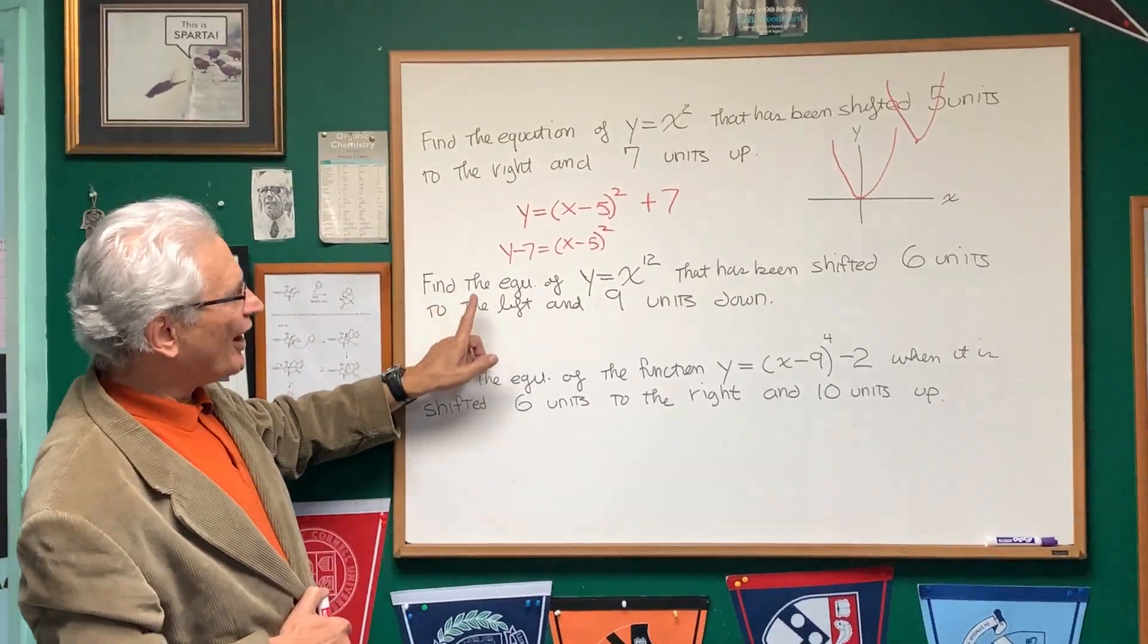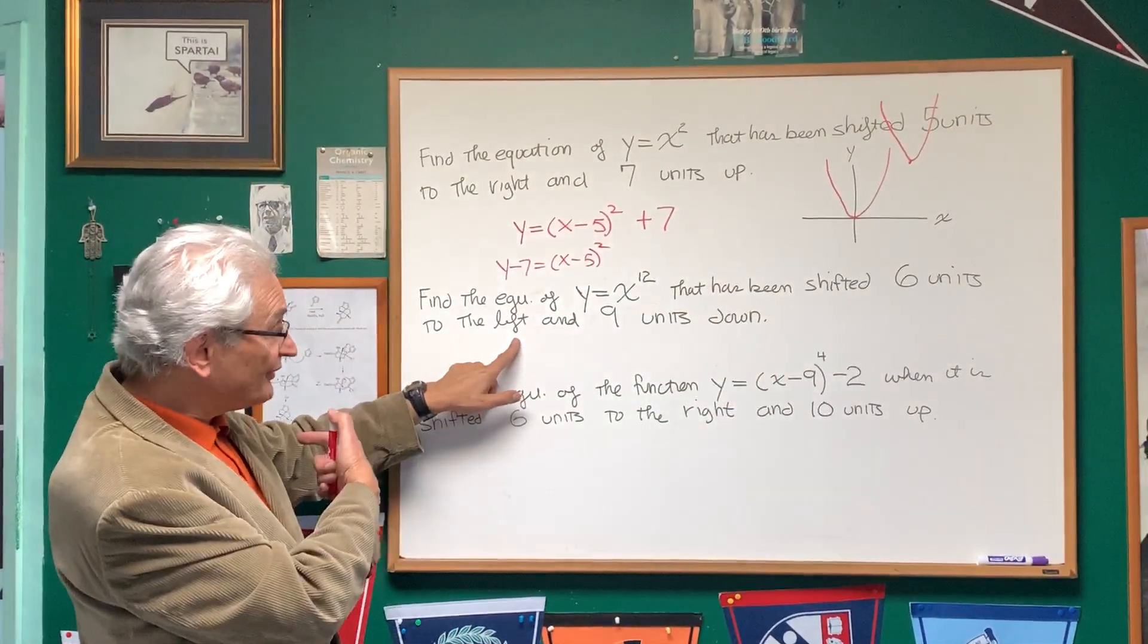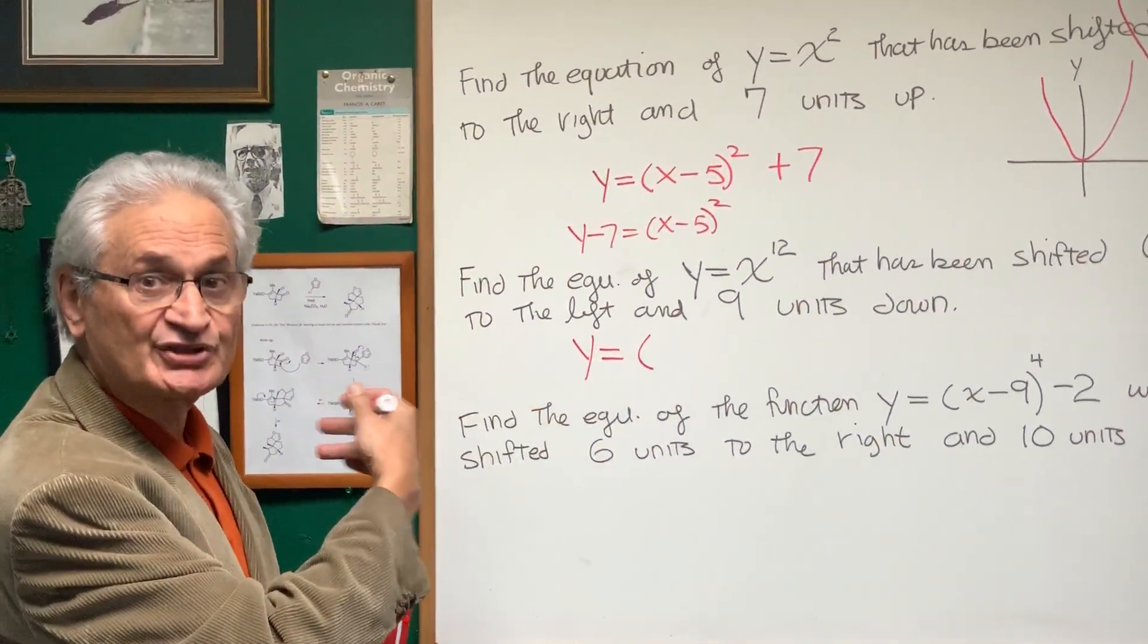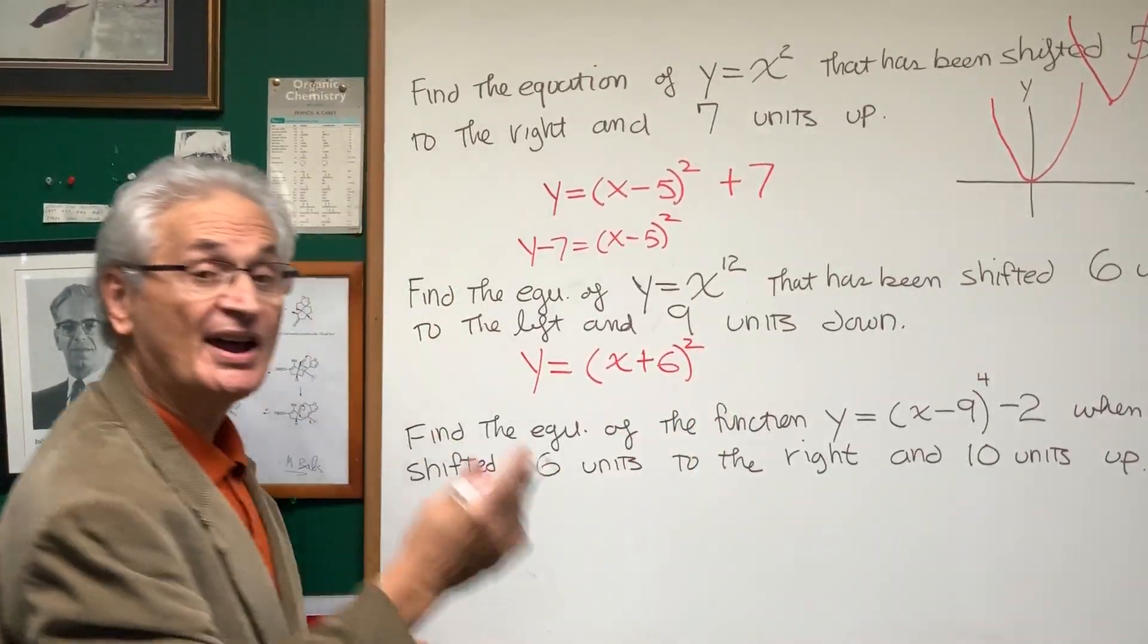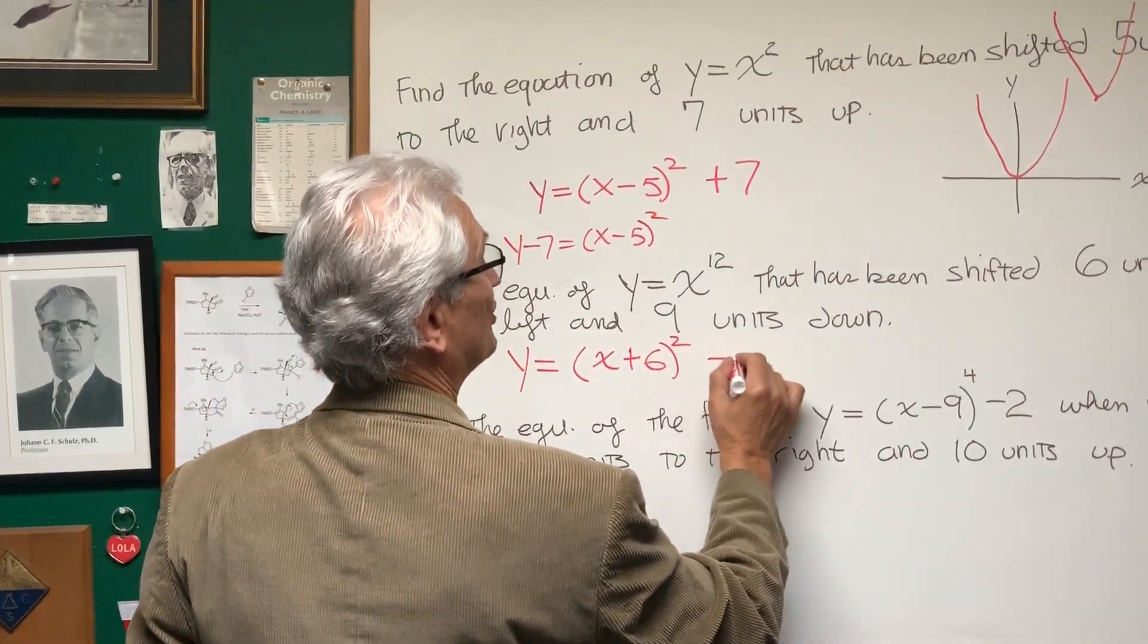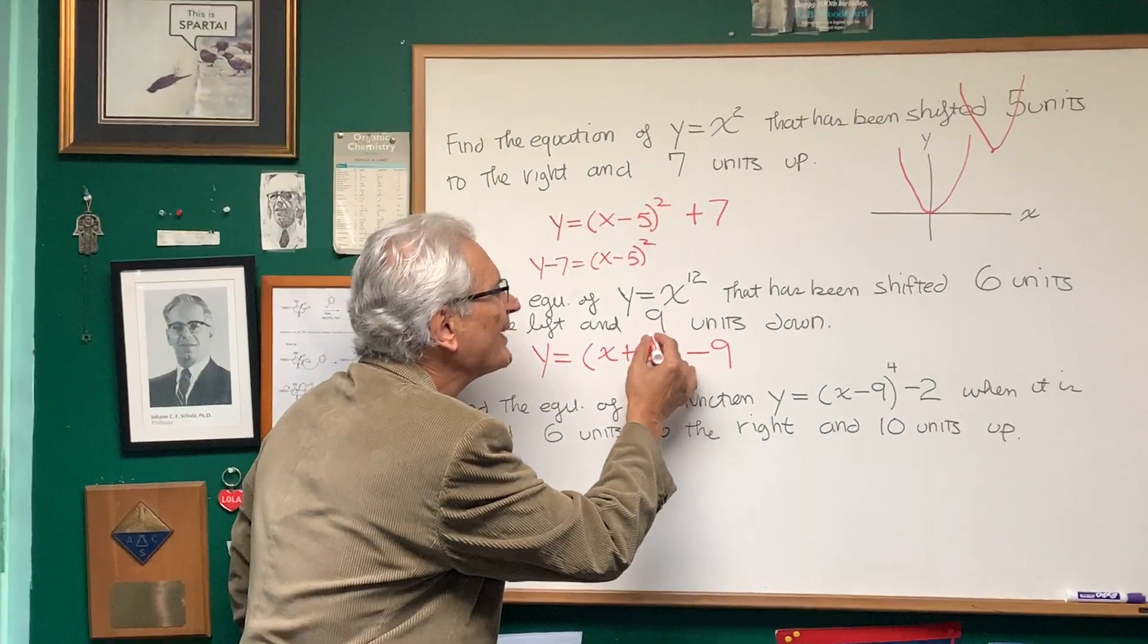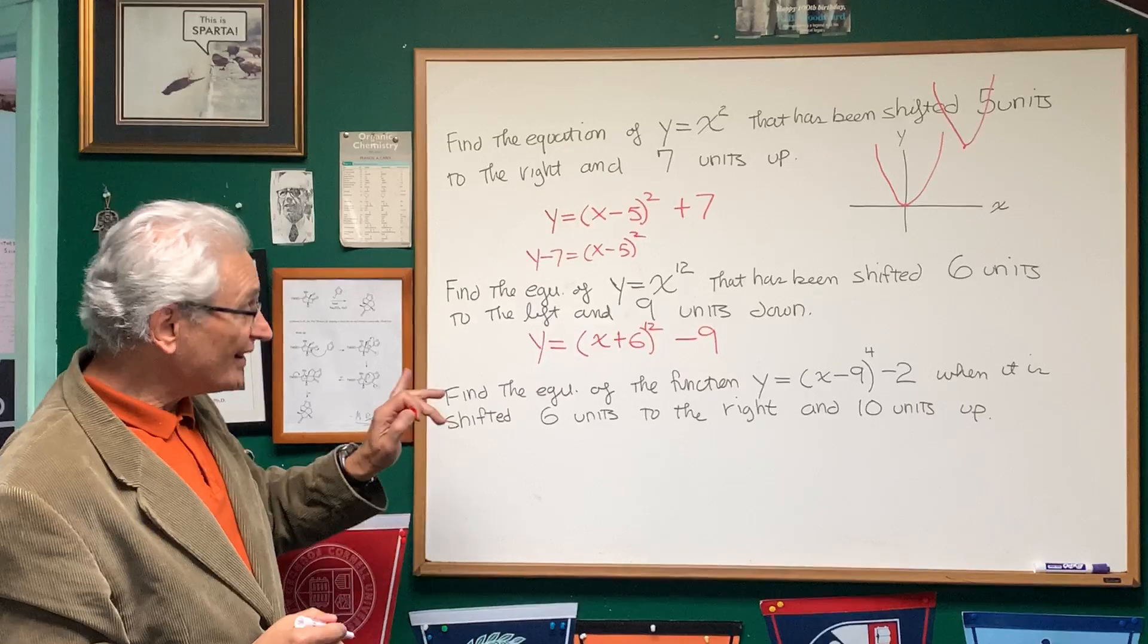Let's do this next one. Find the equation of y = x^12 that has been shifted six units to the left and nine units down. So we're going to write y equals... Now we're shifting six units to the left, which is the negative direction, but since it's with the x, I'm going to make it positive: (x + 6)^12. And nine units down, that's the vertical direction, which is consistent with the direction. It's in the negative direction. So here is our solution - let me make this a 12 - and that's the solution to the second problem.